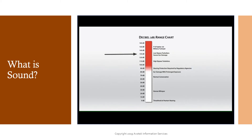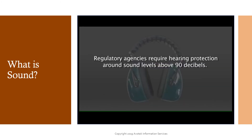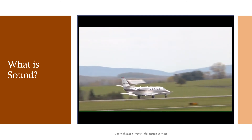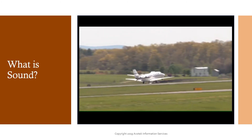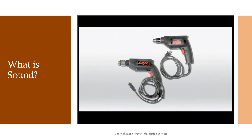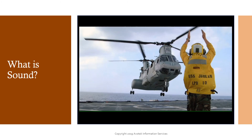Severe ear damage can occur quickly at sound levels above 130 decibels. Prolonged exposure to noise levels above 80 decibels can also cause hearing damage. Most regulatory agencies require that hearing protection be worn when working around anything with sound levels above 90 decibels in order to prevent hearing loss. Any aircraft operation creates sound levels above this level, so always wear hearing protection when operating power equipment or working around operating aircraft.